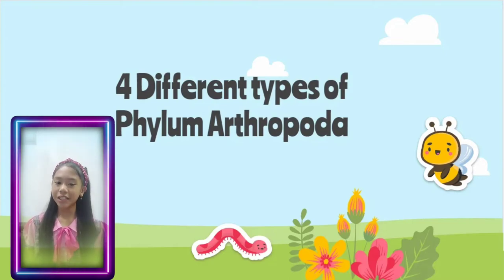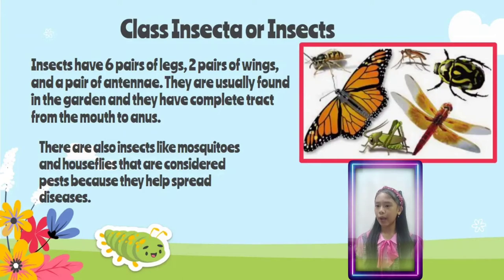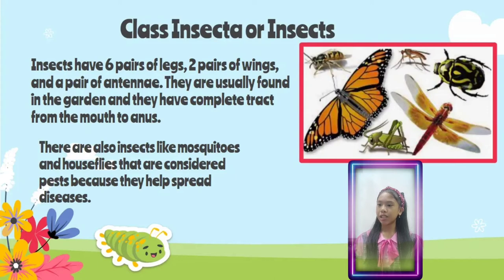First, let us discuss class Insecta, or insects. Insects have six pairs of legs, two pairs of wings, and a pair of antennae. They are usually found in the garden and they have a complete digestive tract from the mouth to the anus. There are also insects like mosquitoes and houseflies that are considered pests because they help spread diseases.